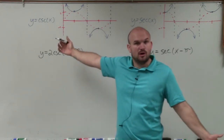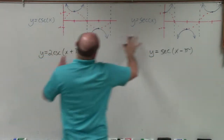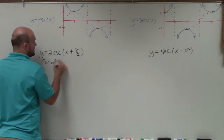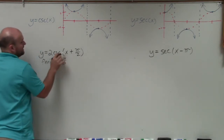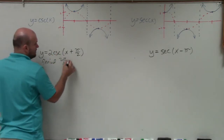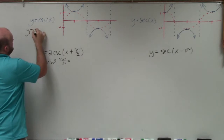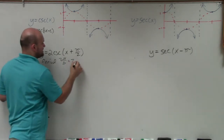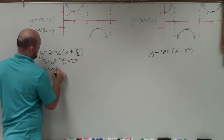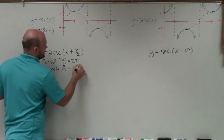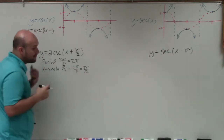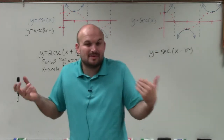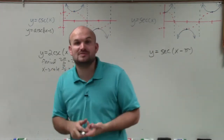Since b is 1, the period is going to be 2π. The period is 2π divided by b, and the x scale is our period divided by 4, so 2π divided by 4, which is π/2. When graphing the cosecant as well as the secant graph, the best thing to do is graph the sine and cosine, which are the reciprocal functions.